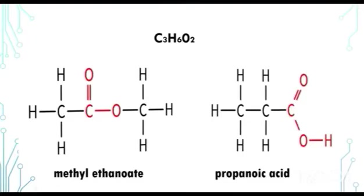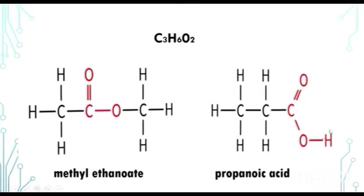Here we have methyl ethanoate and propanoic acid, which belong in different homologous series. Methyl ethanoate belongs in the ester homologous series and propanoic acid belongs in the carboxylic acid homologous series. How many carbon atoms? 3 on each side. How many hydrogen atoms? 6 on each side. How many oxygen atoms? 2 on each side. So our molecular formula is the same: C3H6O2. But the functional group of this one is that of the ester, and here the functional group is the carboxyl group of the carboxylic acid.